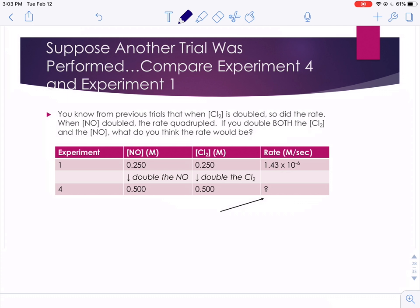Well, if you said 8 times bigger, you're right. We would take that original rate. One chemical makes it double, the other one makes it quadruple, so the new rate in that situation would be 11.4 times 10 to the negative 6 meters per second, or technically 1.14 times 10 to the negative 5 meters per second.